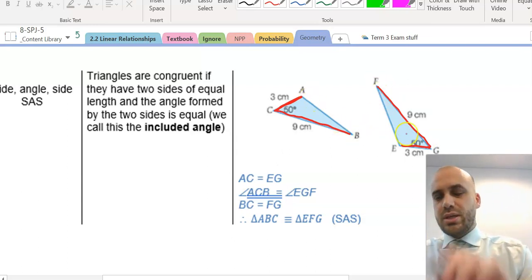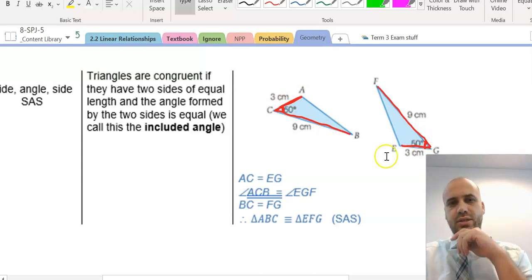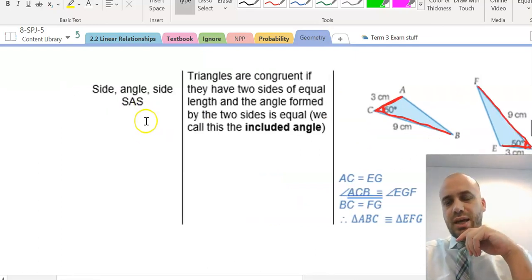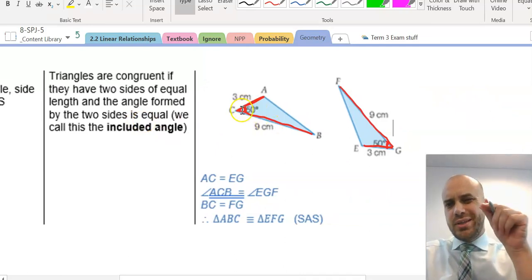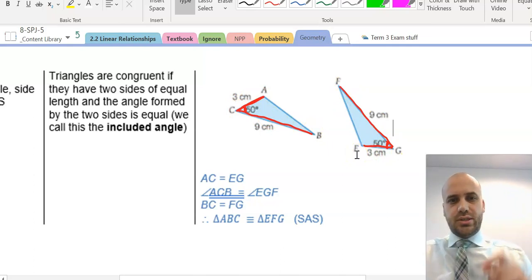We weren't told this third one, but it doesn't matter because we were told the included angle. See the angle between these two sides? The angle between these two sides. That's why we call this the SAS rule, because the angle needs to be between the two sides. The angle needs to be between the two sides.